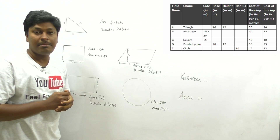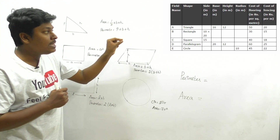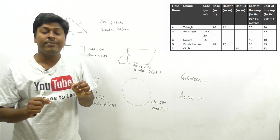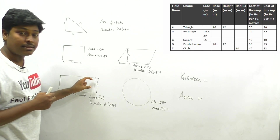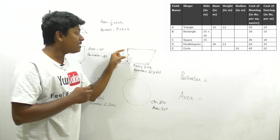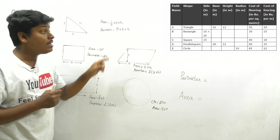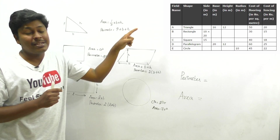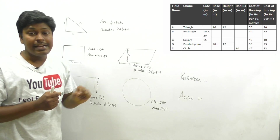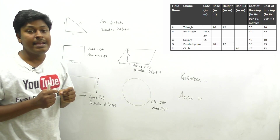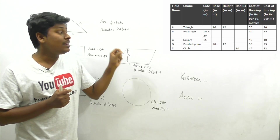Another point where students make mistakes is the parallelogram. For field D, which is a parallelogram, the values are base = 20 and height = 12. The key difference: for a rectangle, length and breadth are given; for a parallelogram, base and height are given. Don't confuse these two shapes.